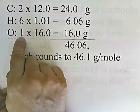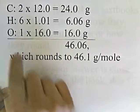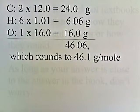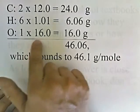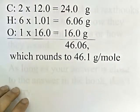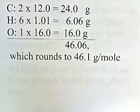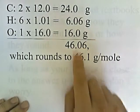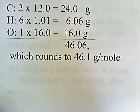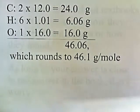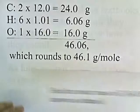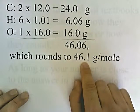And then oxygen: there's one oxygen in ethanol. On the periodic chart, oxygen is listed as 15.999, but rounded to three significant digits that becomes 16.0. If we add up the masses of all these, we get 46.06, which rounds to 46.1 — three significant digits. That's our answer: one mole of ethanol has a mass of 46.1 grams.